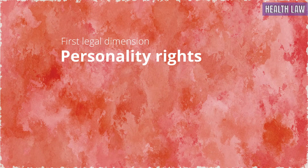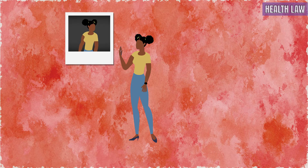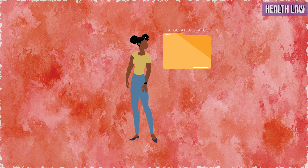The first legal dimension that is relevant to personal genomic sequence data is personality rights. These are rights that are intended to protect one's personality. Examples are the right to dignity, to respect a person's name, reputation, and — important in the context of genomic information — a person's right to privacy. We refer to a person to whom data relates as the data subject. Generally, data subjects have the right to control data about themselves, and this also applies to personal genomic sequence data. A data subject has the right to control his or her own personal genomic sequence data.